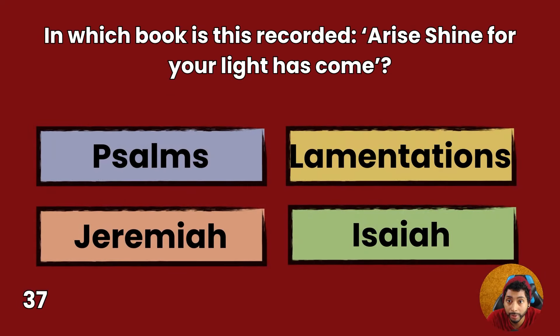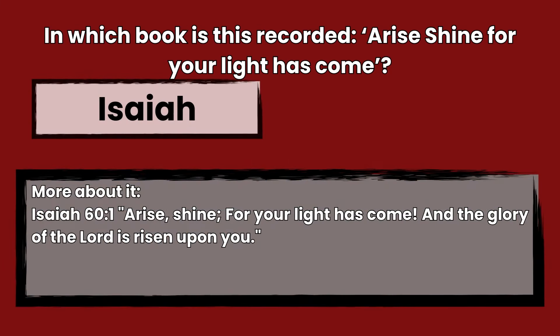Question 37: In which book is this recorded: 'Arise, shine, for your light has come'? Psalms, Lamentations, Jeremiah, or Isaiah? Answer: Isaiah. Isaiah 60:1 — Arise, shine, for your light has come, and the glory of the Lord is risen upon you.